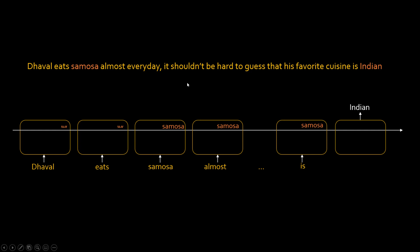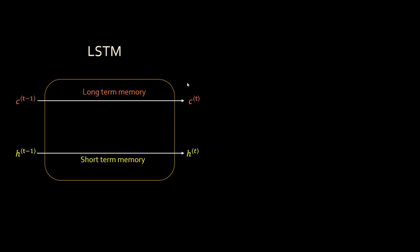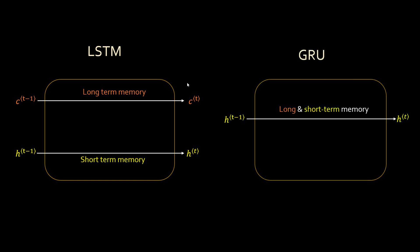In the last video, we learned about LSTM, and LSTM can do this — it can remember long-term memory. If you have not seen that video, please go and watch the LSTM video because it will give you understanding on certain concepts. LSTM has both long-term memory and short-term memory. GRU is a modified or lightweight version of LSTM where it combines long and short-term memory into its hidden state.